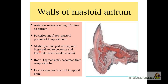Medially, the mastoid antrum is formed by the petrous part of the temporal bone, which is related to the posterior and horizontal semicircular canals. The roof, known as the tegmen antri, separates it from the temporal lobe. The lateral part is formed by the squamous part of the temporal bone.